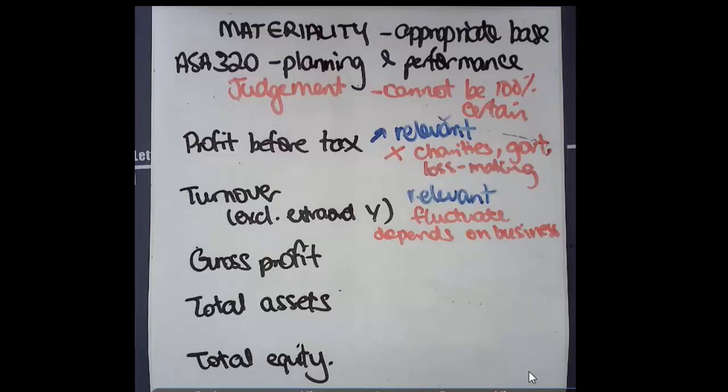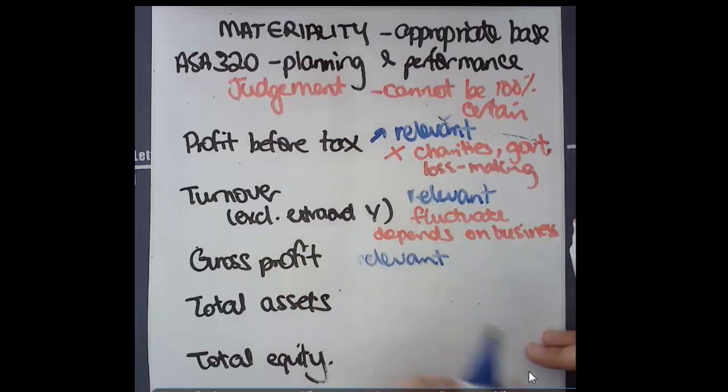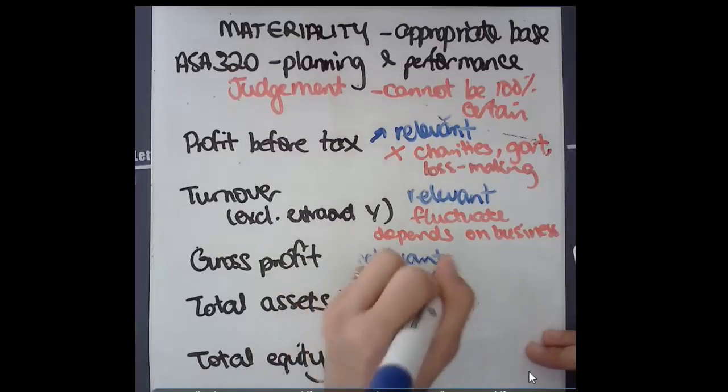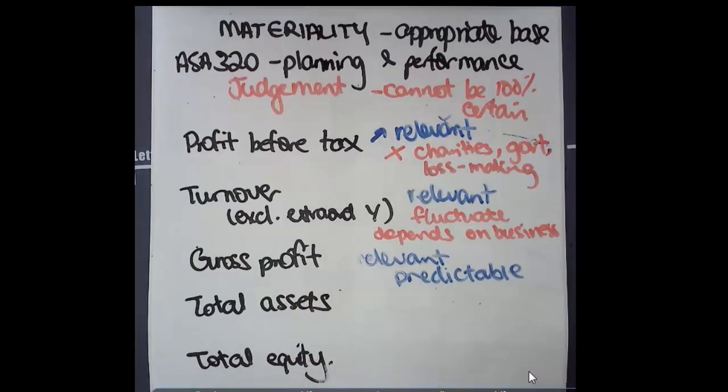The next one is gross profit, which I mentioned before is cost of goods sold subtracted from revenue, which definitely again is relevant. It's relatively predictable as well because the percentage change in cost of goods sold and percentage change in revenue tends to be fairly consistent. The product prices stay similar and product costing stays similar and it's very predictable. So even if turnover is quite high, profit should be quite similar as a proportion.